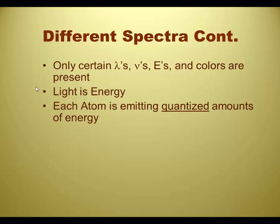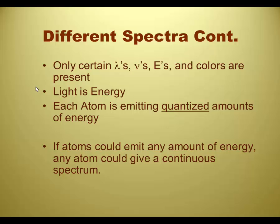The reason why there are only very specific spectra is because only certain wavelengths, which is to say certain frequencies or certain energies, are present. That's why we get the different colors. Light, of course, is energy. And the reason for that to happen is because each atom is emitting quantized amounts of energy, specific sizes. Quantized sounds like the word quantity. Right. It's specific amounts, specific sizes.